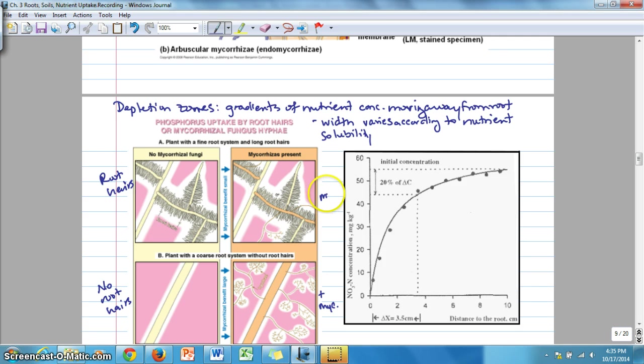But with root hairs plus mycorrhizae, there is no gain really over having over the other two where root hairs and mycorrhizae are present. So developing these mycorrhizal associations is energy expensive. And so typically plants have one or the other, not to say that they never have both, but generally speaking, they have one or the other. And there's probably some plasticity with that in terms of time of year and phenology, stage of development, and nutrient availability.